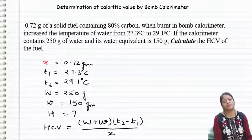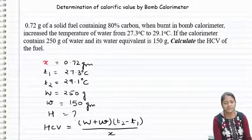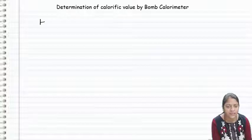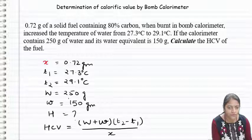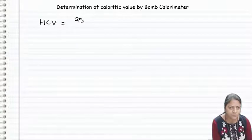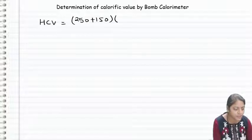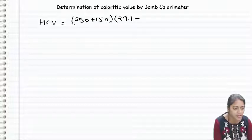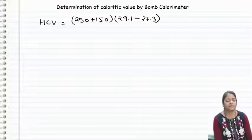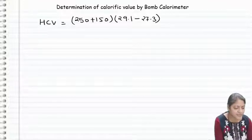This is the temperature. We have been asked HCV. Let's calculate this. HCV will equal to - so how much water has given us? 250 plus 150, capital W plus small w. 250 plus 150 into T2 has given us 29.1 degree centigrade and T1 has given us 27.3 degree centigrade. Clear? So this way upon x.